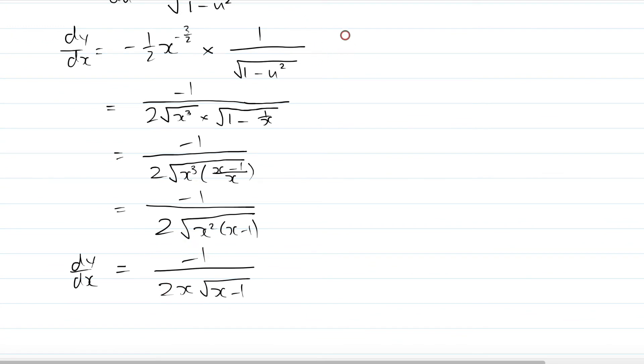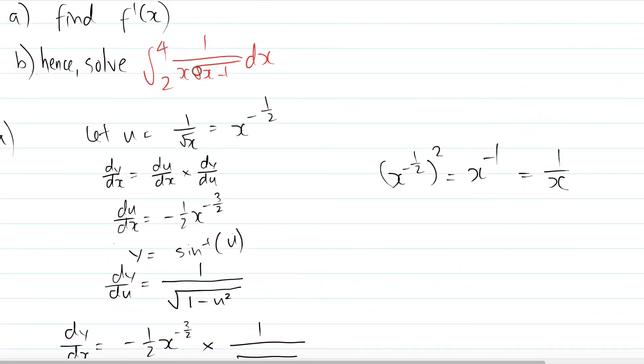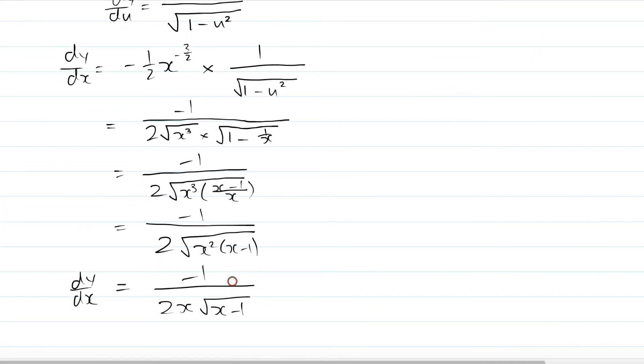Okay, so part B, it says solve for the integral from 4 to 2, 1 over x square root x minus 1. Right, so you can actually use your information from the first part, your answer from the first part, to help you solve for this. So we want to solve for the integral from 4 to 2, 1 over x square root x minus 1. How do you do this?